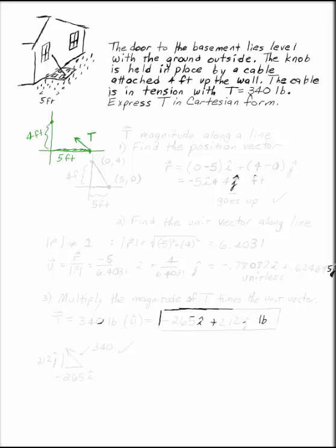We need to find T in Cartesian form. This is a case where your vector is given in terms of magnitude along a line. There are three different ways a force can be written down. The first is a magnitude in a known direction. We don't have any angles. The second is in Cartesian form. Well, that's where we want to get to. And the third is magnitude along a line.